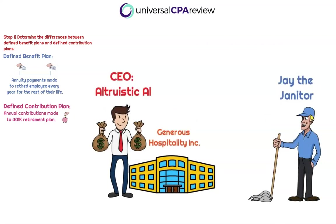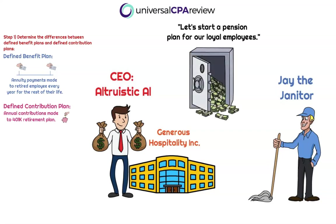Let's start by meeting Jay the janitor and Altruistic Al, who's the CEO of Generous Hospitality. Generous Hospitality is a publicly traded company, and Altruistic Al is starting to feel a little bit generous — he's looking to start a pension plan for his loyal employees. When Altruistic Al makes the decision as to what type of pension plan he'd like to start, he's going to choose between a defined benefit plan and a defined contribution plan, and you're going to come in as the financial reporting expert to explain the difference.